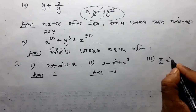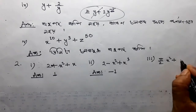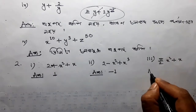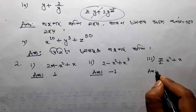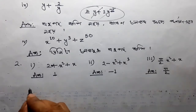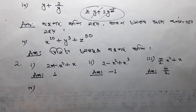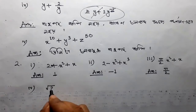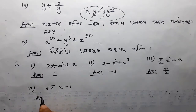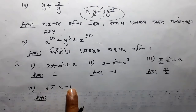x squared plus x. Number 4: root 2x minus 1. Do you know x squared term? There is no x squared term.